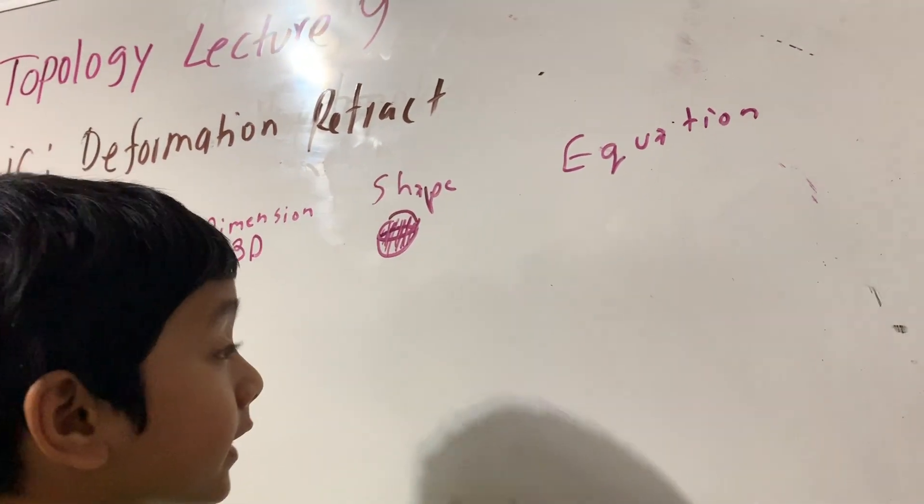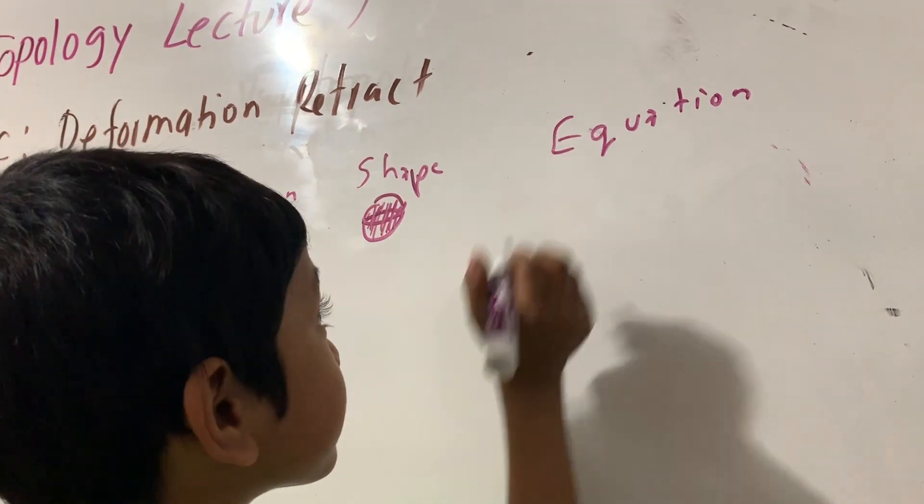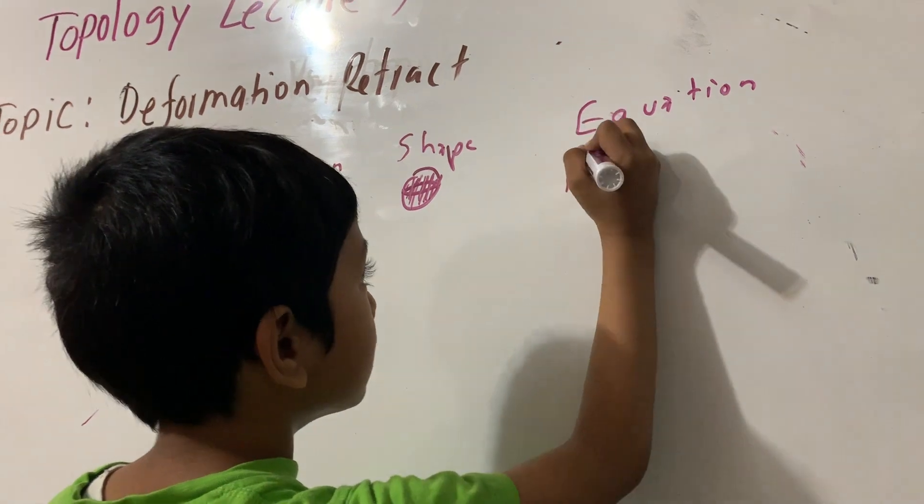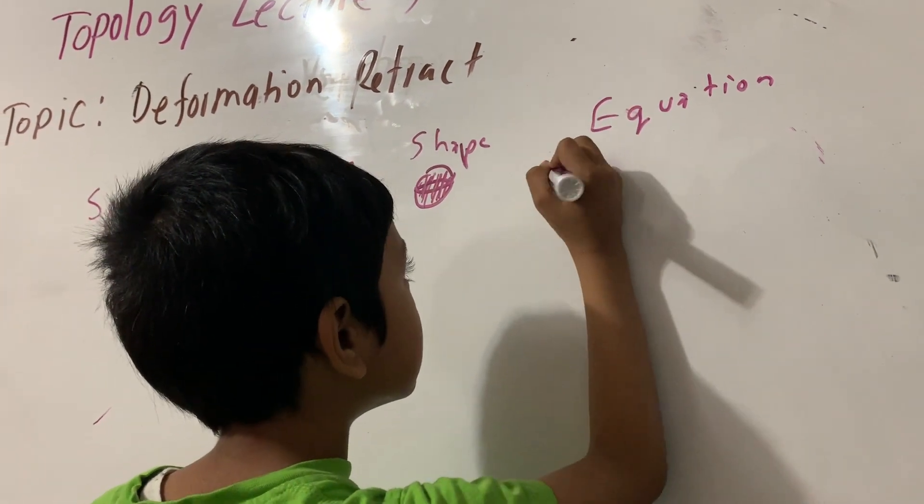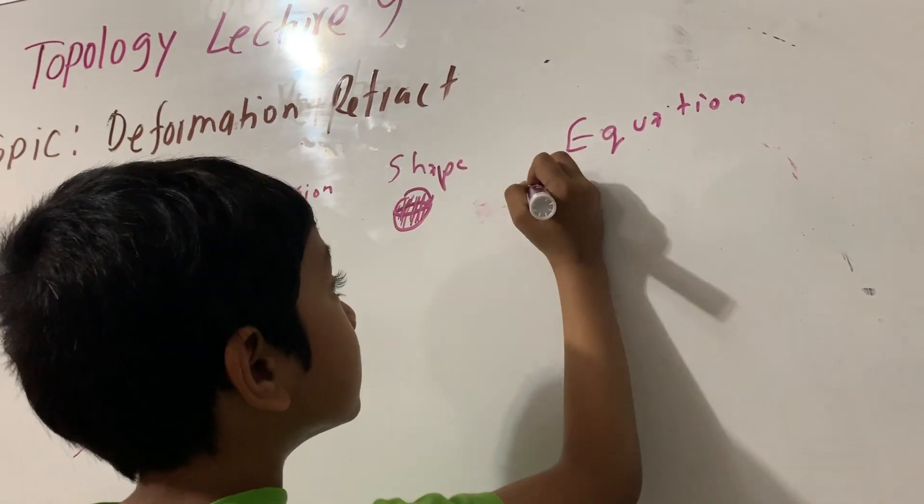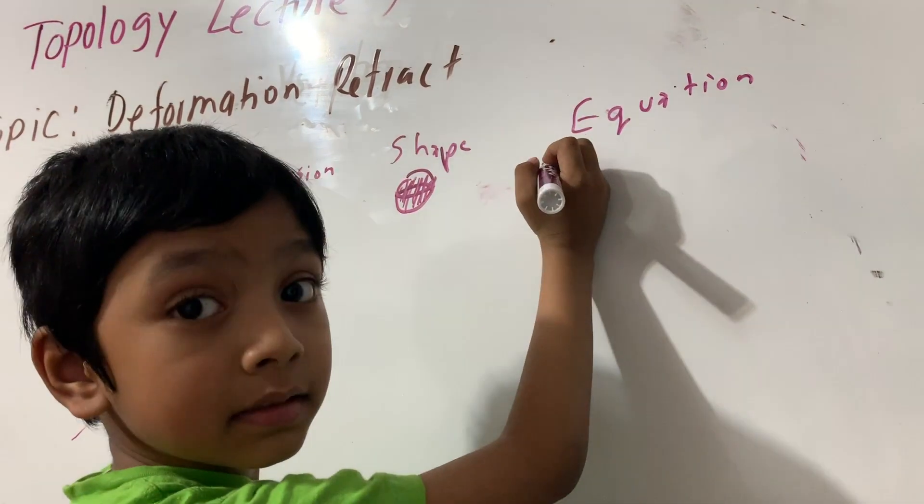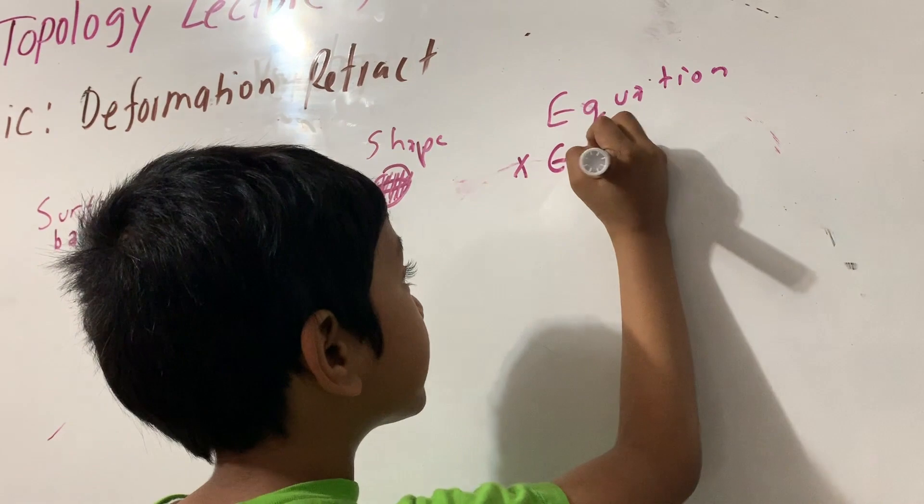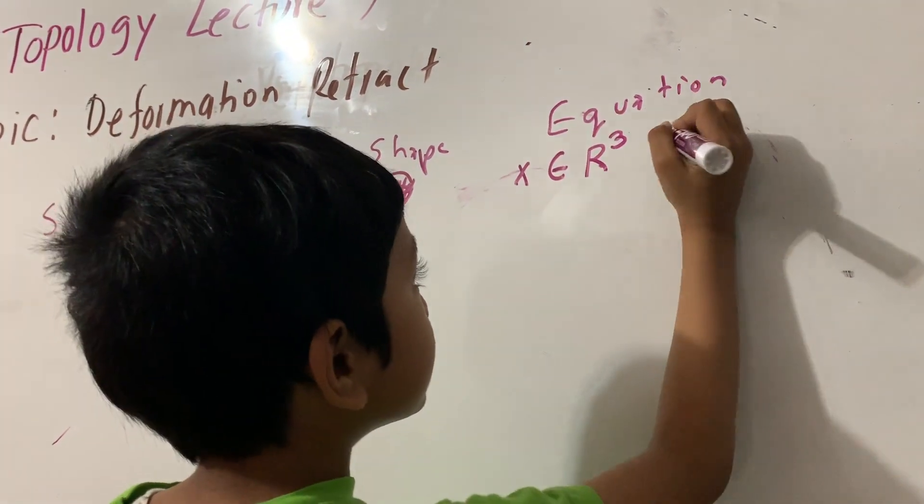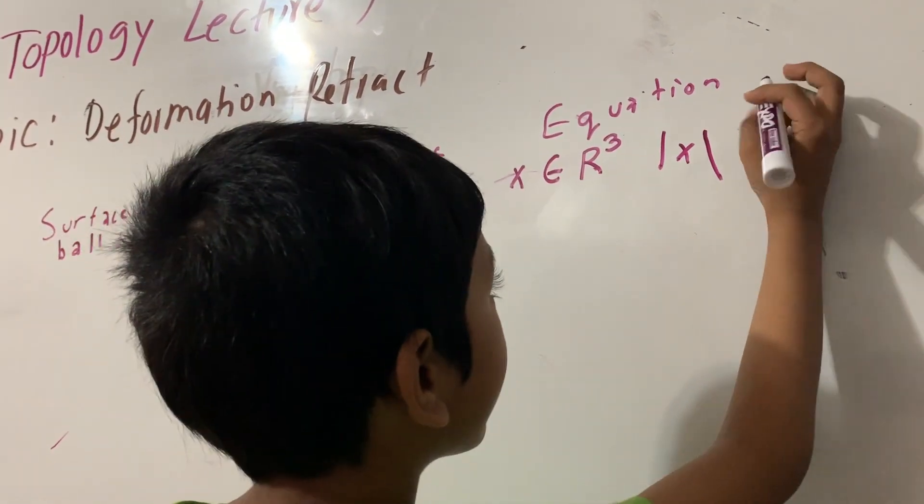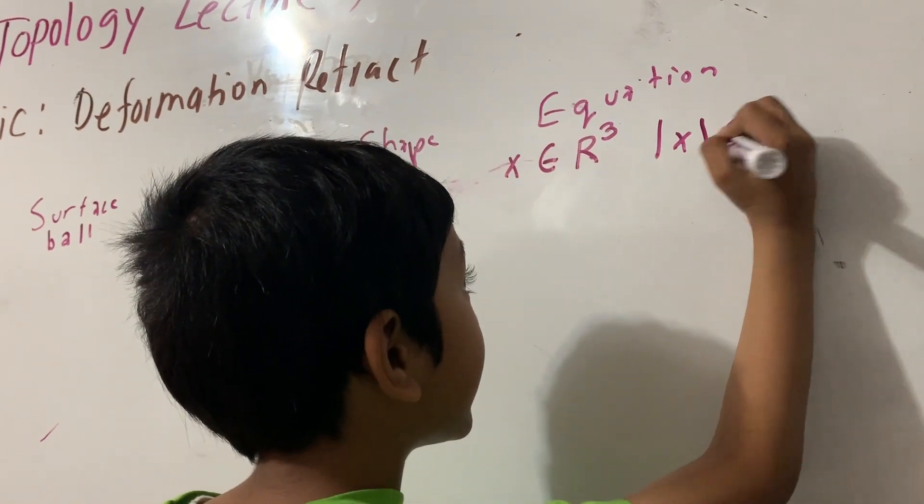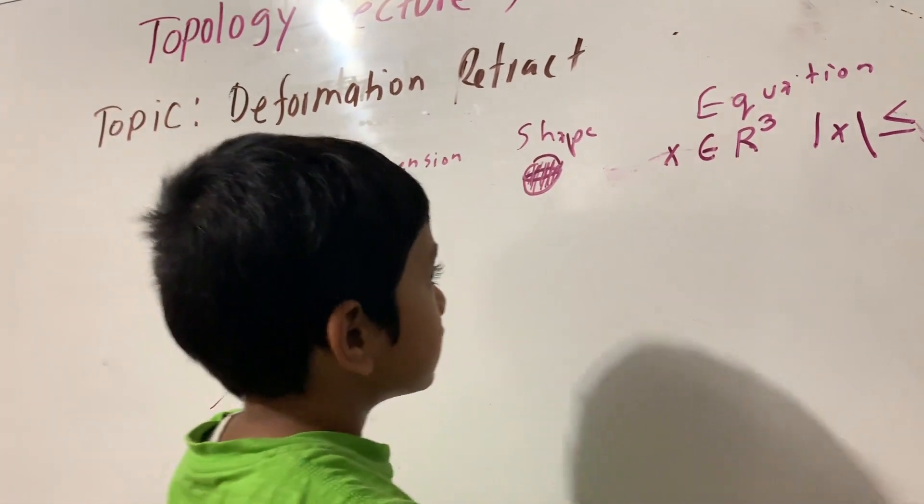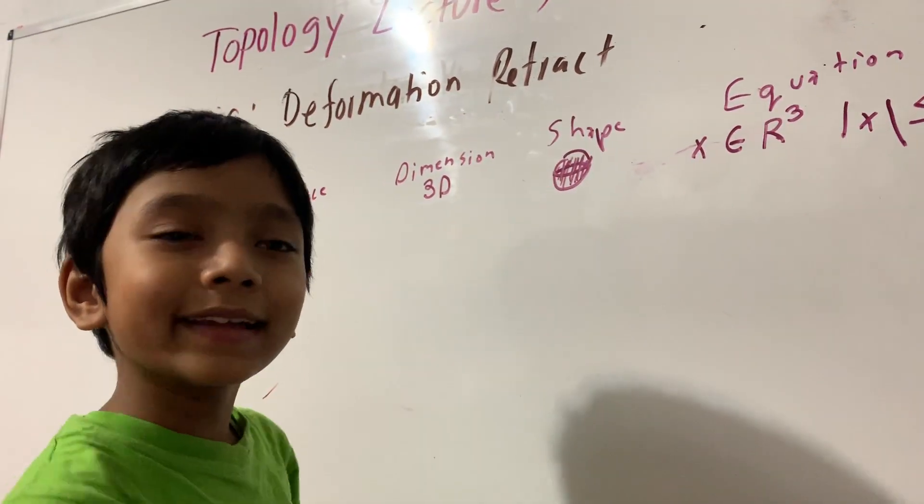And its equation is x belongs to R cubed, such that x is less than or equal to 1. So it can be equal to or less than 1.